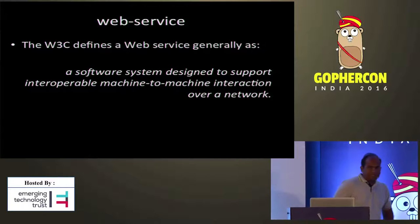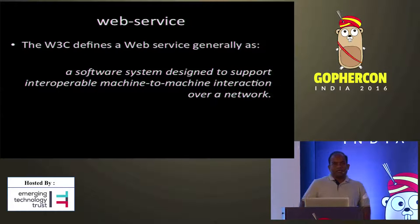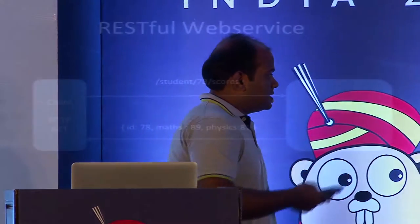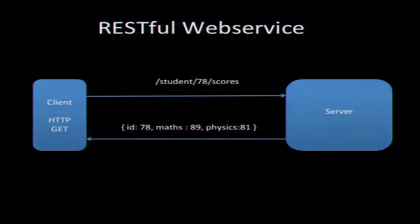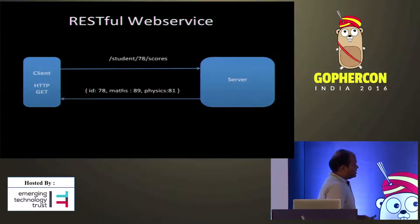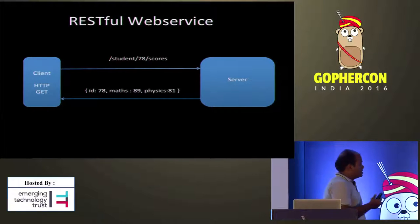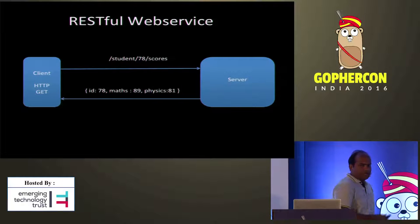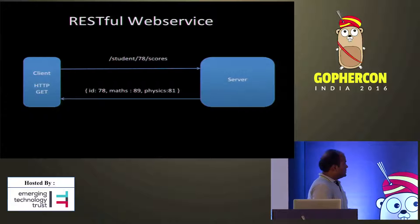W3C defines a web service as a way for machines over a network to interact with each other. Typically a web service would look like this: there is a client, a server, and a GET request for something like student 78 score. The URL is always like a folder structure — like accessing a file in a folder. The response is most often JSON, but it can be XML as well.